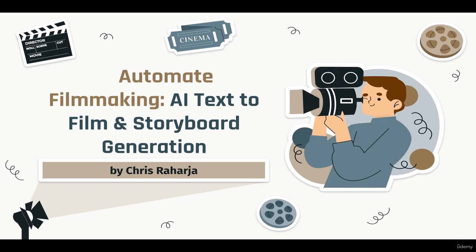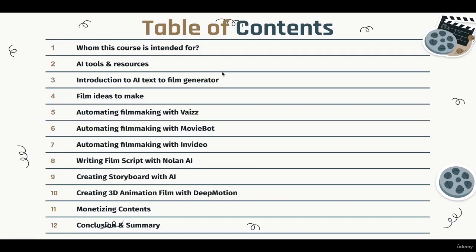Welcome to the course — I'm so excited to have you here. In this next video we're going to get to know more about what we'll learn in this course. In the table of contents I'm going to explain what you'll do and learn in each chapter. In total we have 12 chapters, so by the end of this video you'll have a better understanding of what to expect from each chapter.